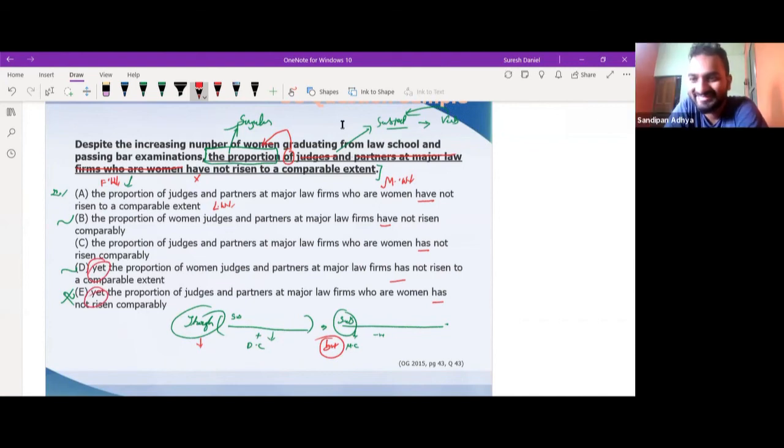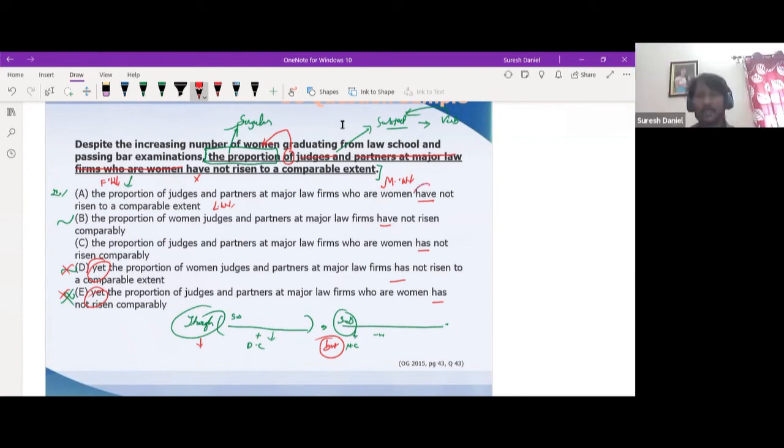Wrong, yeah. So we would not pick these D and D. It should be the option, yeah. So we should eliminate the options with 'have' as well, because this would not work because we know that the proportion is singular—it takes 'has.' So the option with 'has' is C.